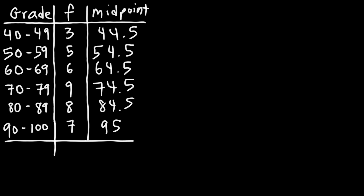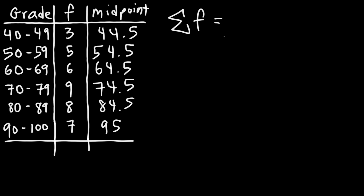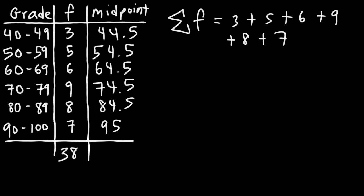Our next step is to take the sum of the frequency column, which will help us calculate the mean. So it's 3 plus 5 plus 6 plus 9 plus 8 plus 7, which tells us how many students are in the class. There are a total of 38 students.